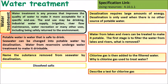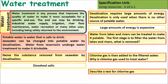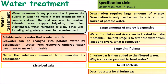The substance removed by desalination is dissolved salts. We don't use desalination unless necessary because it uses large amounts of energy and is expensive. Large bits of plants and debris are removed from reservoir water by filtration. Chlorine is added to kill bacteria. A test for chlorine is that it bleaches litmus paper.